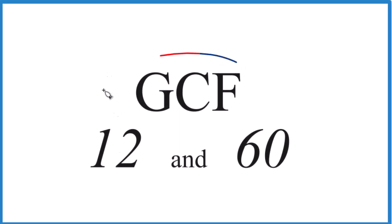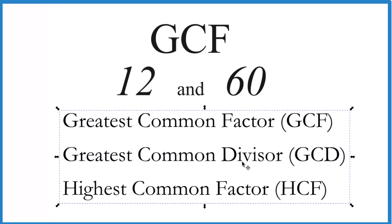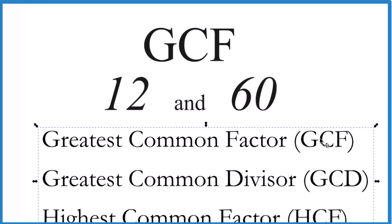So here's how we can find the greatest common factor for 12 and for 60. The greatest common factor is also called the greatest common divisor or the highest common factor. They're all the same thing. I like greatest common factor though.